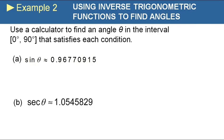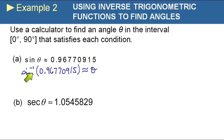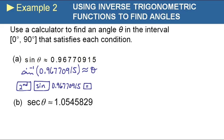Example two: use a calculator to find an angle in the interval 0 to 90 degrees that satisfies each condition. If sine of theta equals 0.96770915, rewrite it in inverse form: theta equals inverse sine of 0.96770915. Push second-sine, enter your function value, and press equal — it gives you approximately 75.4 degrees. Inverse sine takes a function value as input and returns an angle.